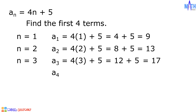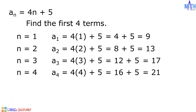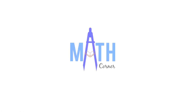To determine the fourth term, or a sub 4, the value of n is equal to 4. 4 times 4 plus 5. Since 4 times 4 is equal to 16, then 16 plus 5 is equal to 21. And the first 4 terms are 9, 13, 17, and 21. And we are done illustrating arithmetic sequences. That's all for this video. Thank you for watching.